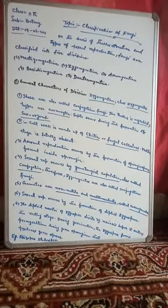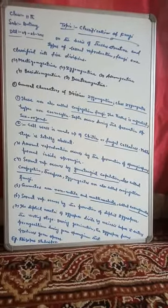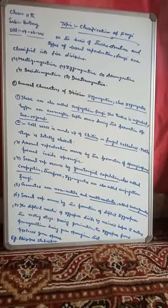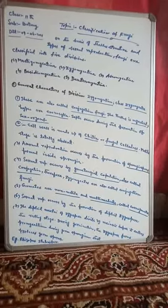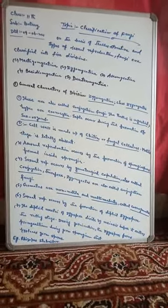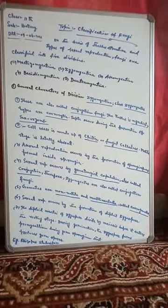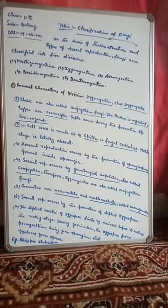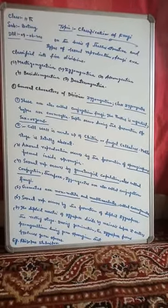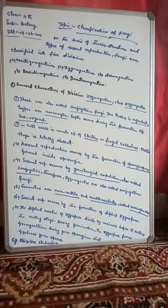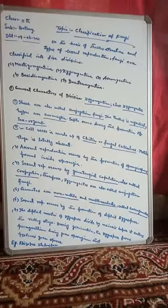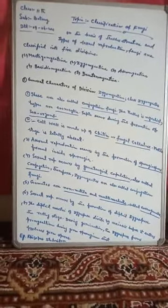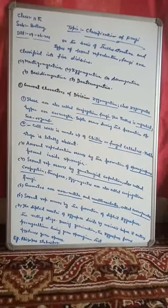This division Zygomycotina is also called conjugation fungi. The septa occur during the formation of sex organs, as is also the case in Mastigomycotina. So in Zygomycotina, septa occur during the formation of sex organs.